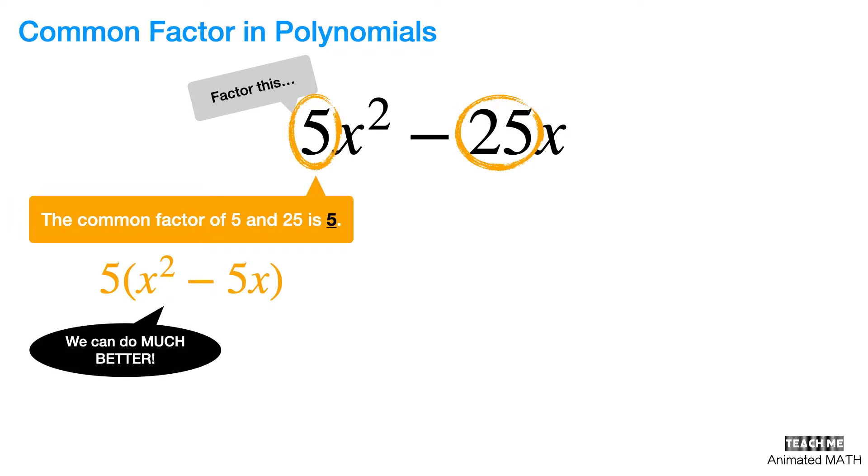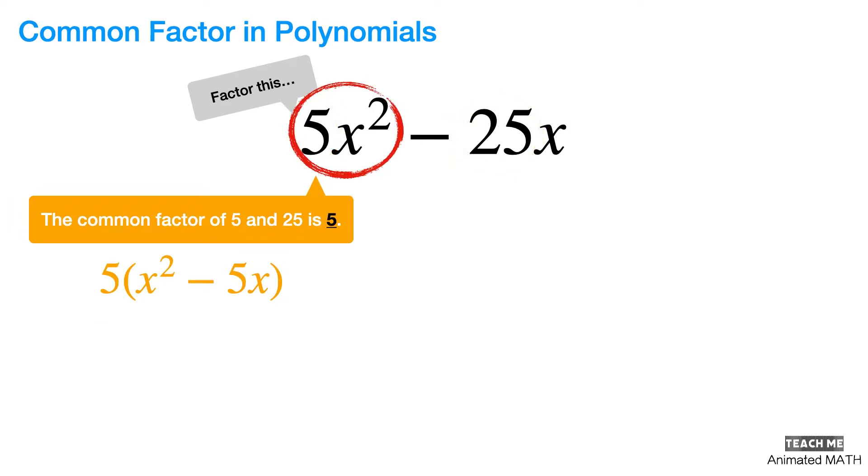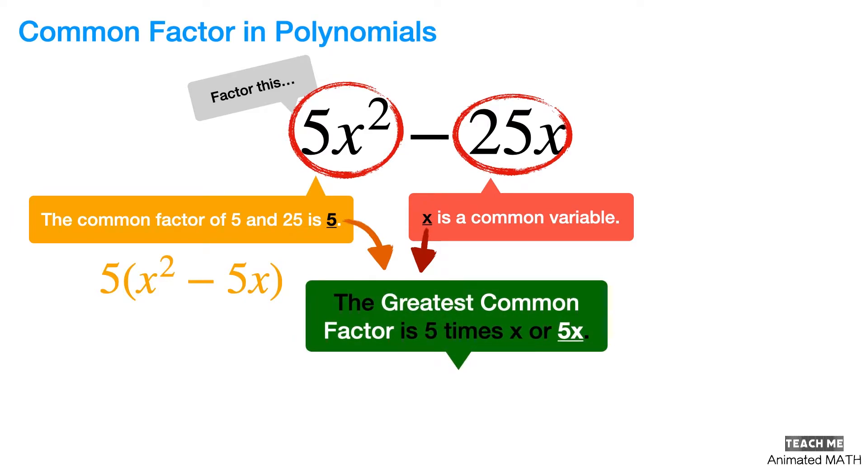5x squared and 25x also share the variable x. Which means that the greatest common factor here is actually 5 times x or 5x. And now, we rewrite the expression again into its simplest form, which is 5x times x minus 5.